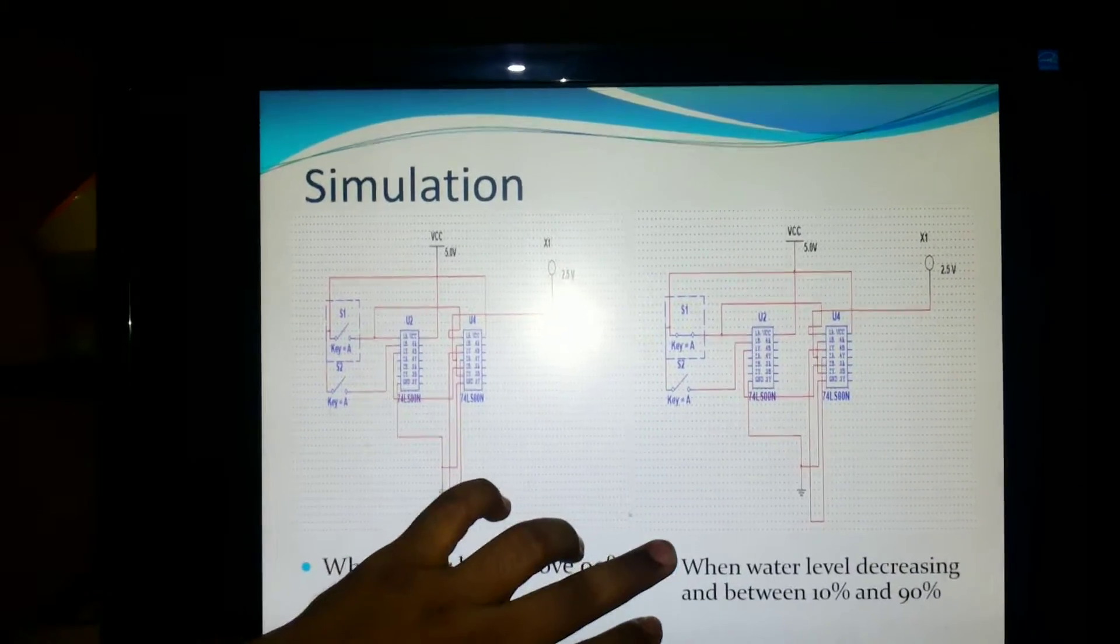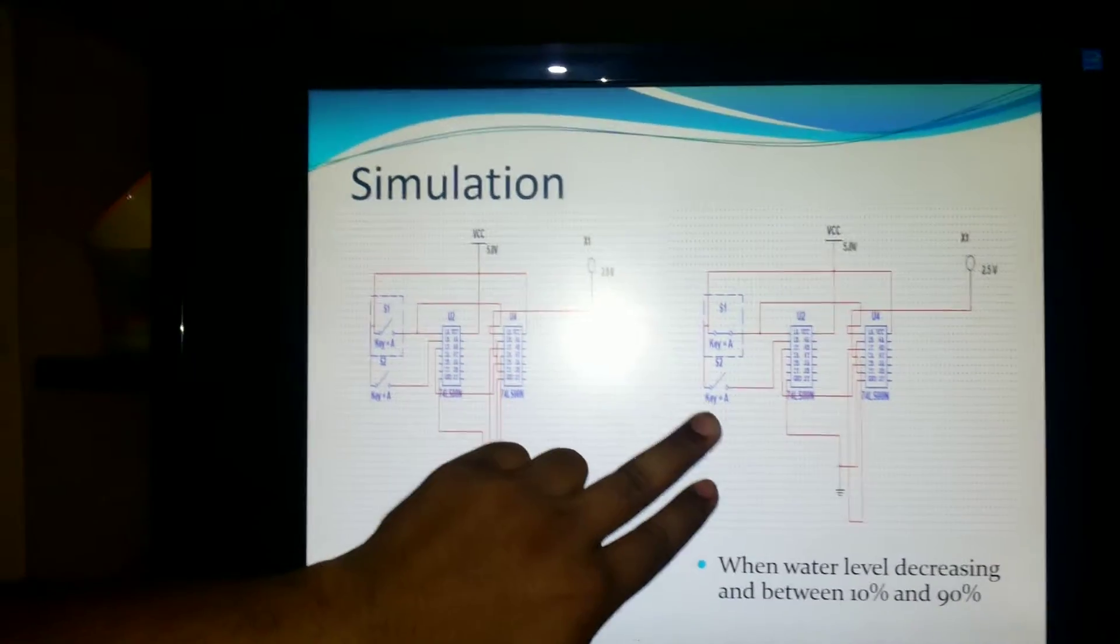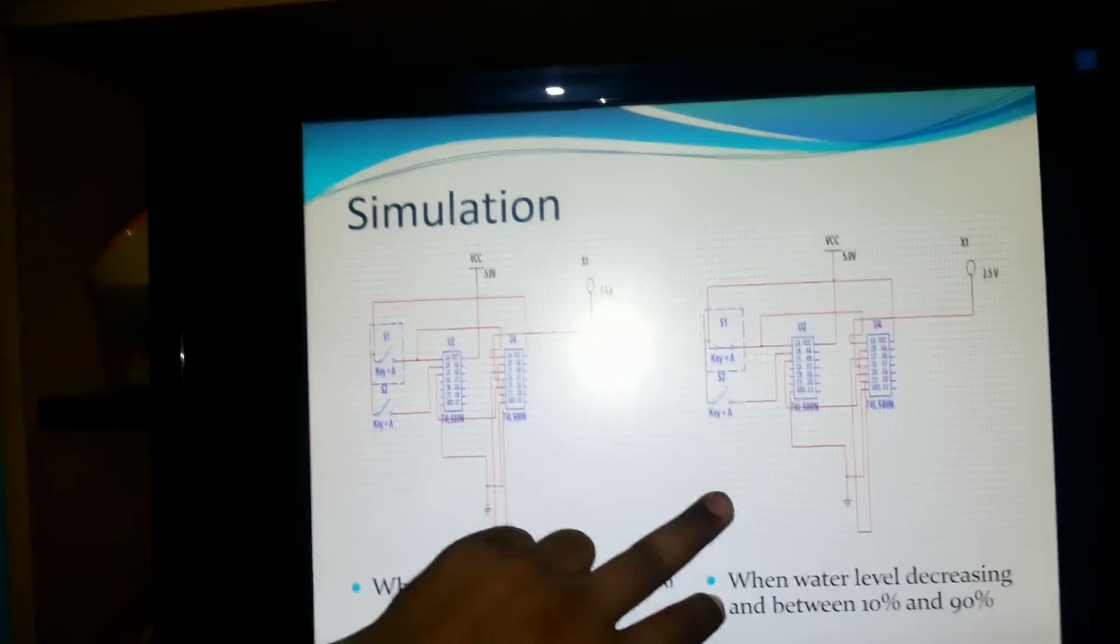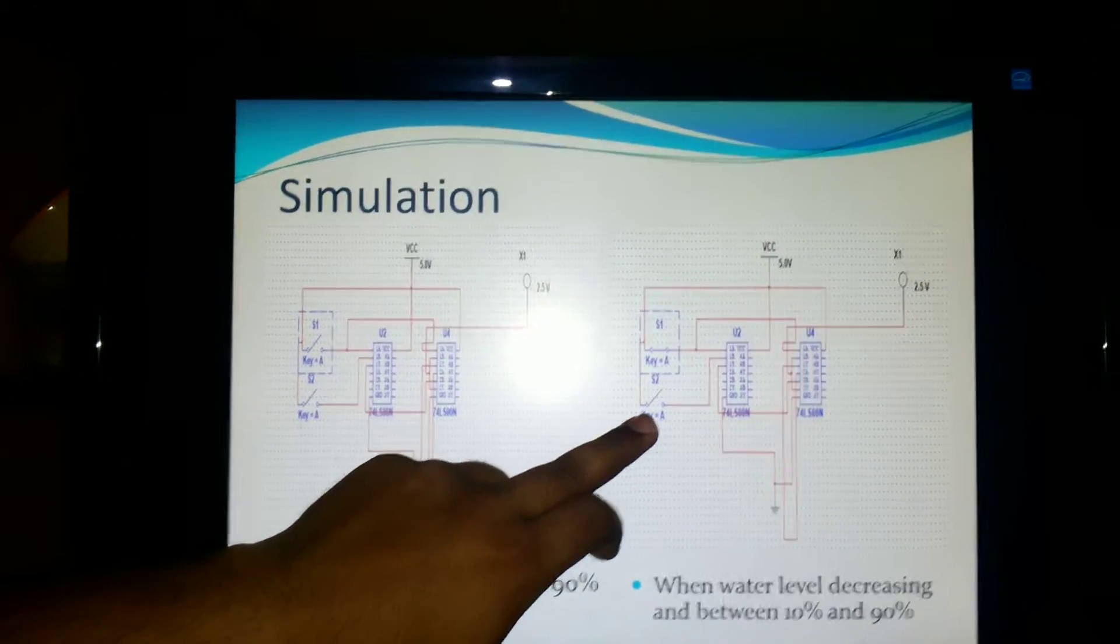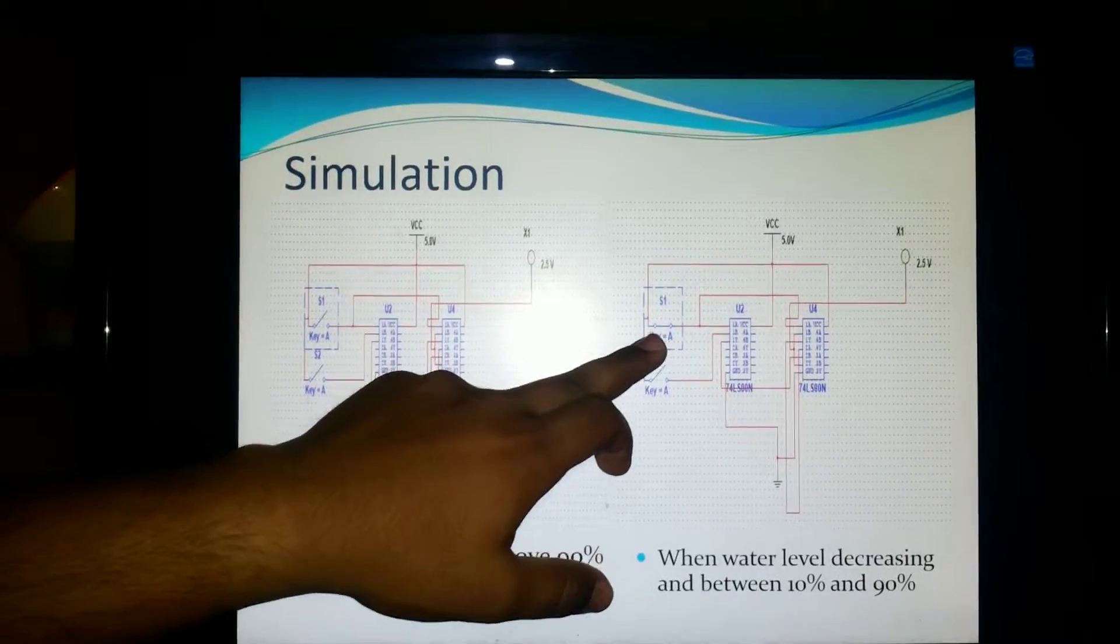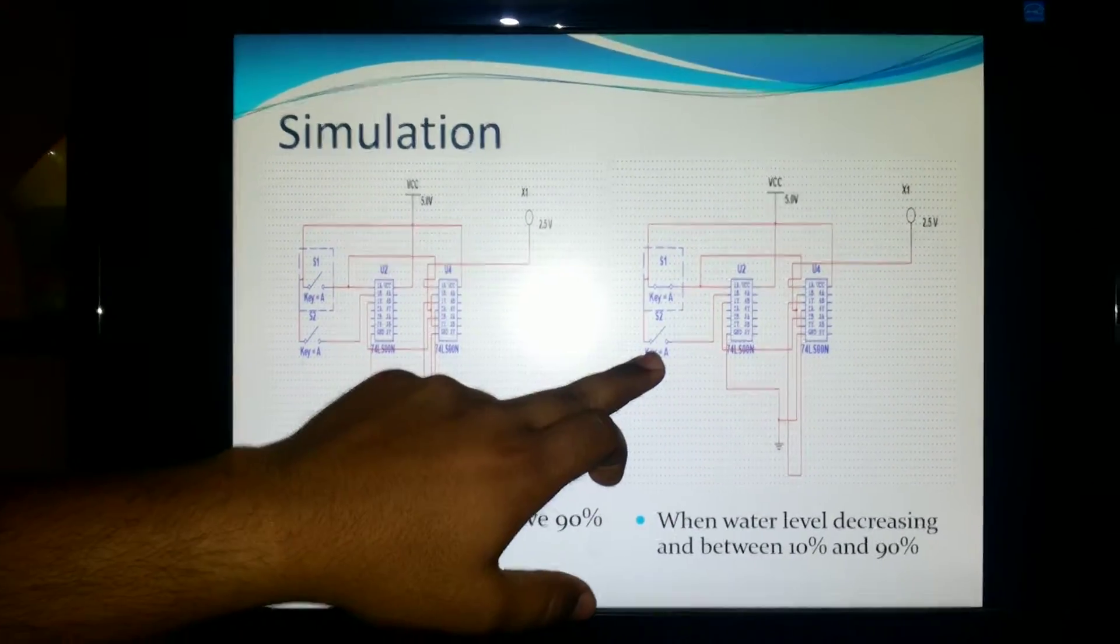And when water level is decreasing, that means it is between 10 percent and 90 percent. That means the switch is zero, one switch is on and another is off.